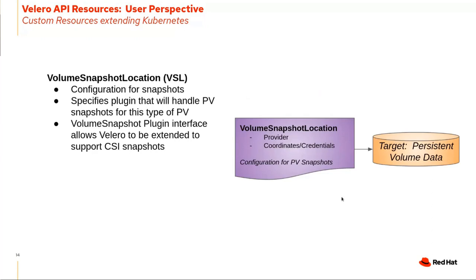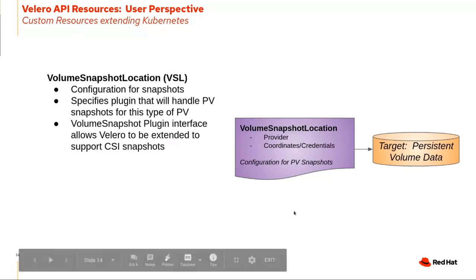For volume snapshot locations — the interface that allows Velero to be extended to support CSI snapshots — you can write a plugin for any type of PV provider. Out of the box you have Amazon EBS, Azure File System, and Google Cloud Storage, plus the supported CSI driver that we'll be demoing.